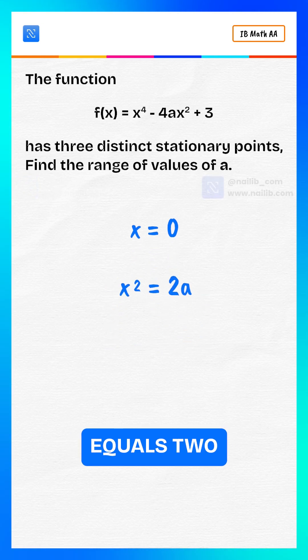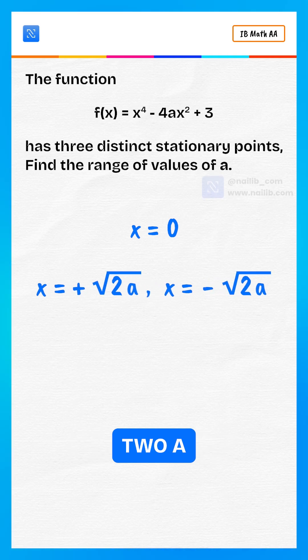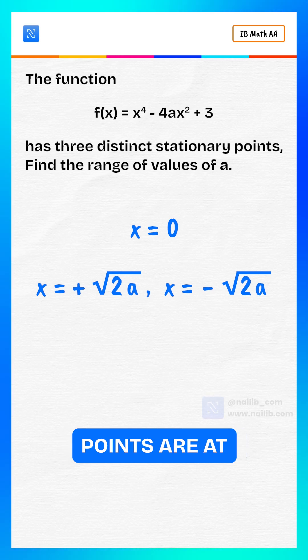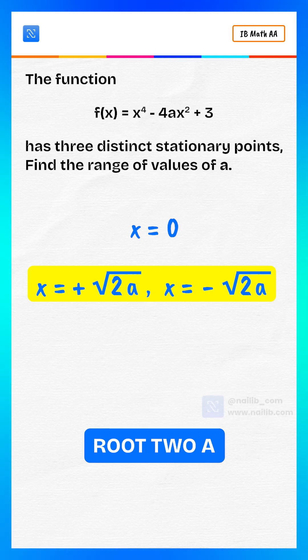So x squared equals to 2a, which means x equals to plus root 2a or x equals to minus root 2a. So the stationary points are at x equals to zero, x equals to root 2a, and x equals to minus root 2a.